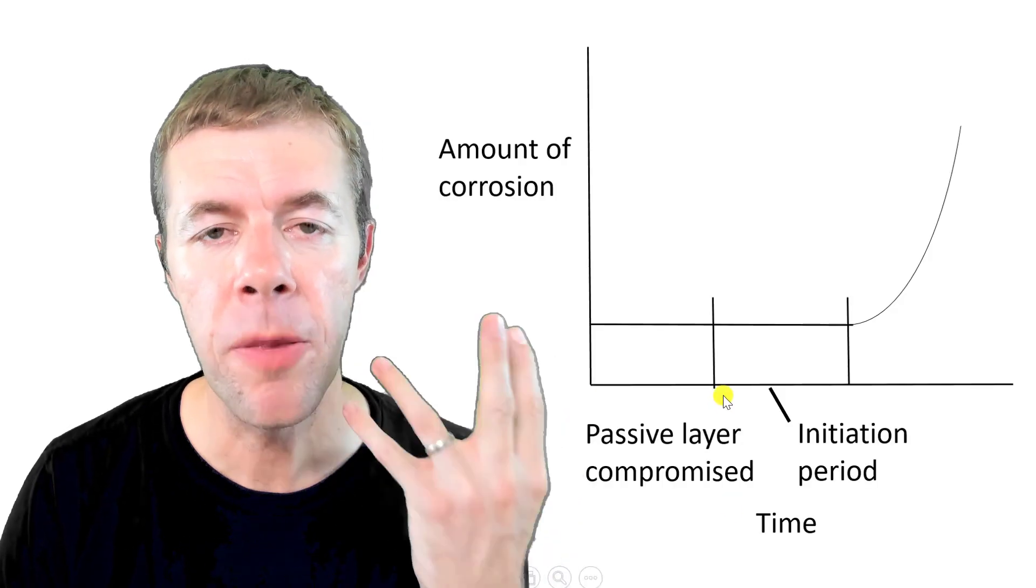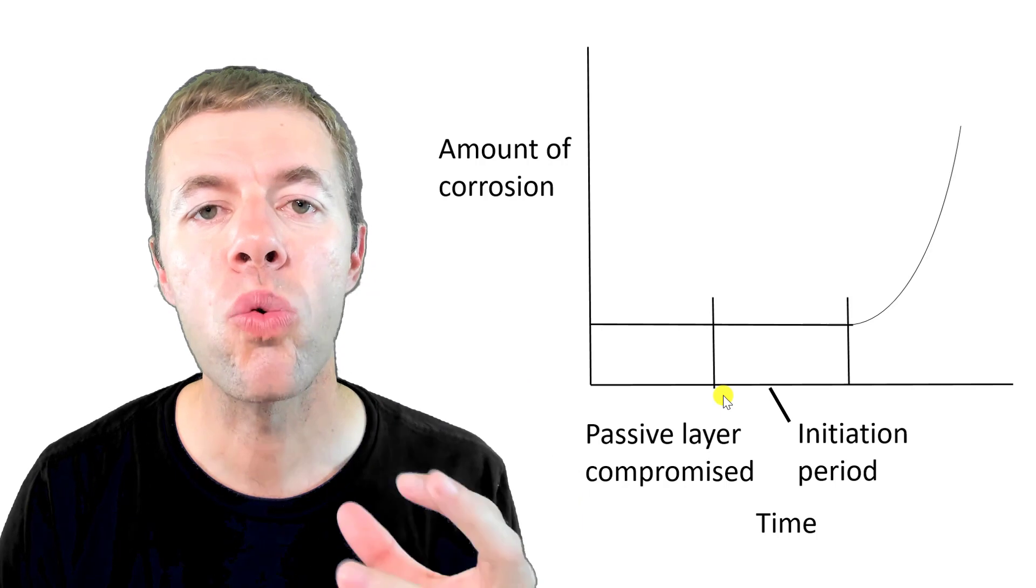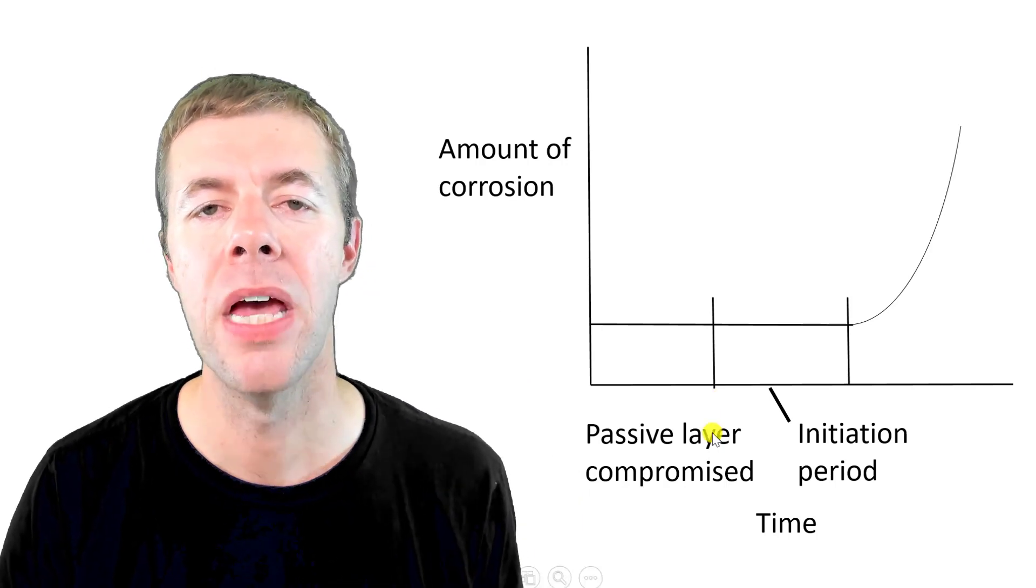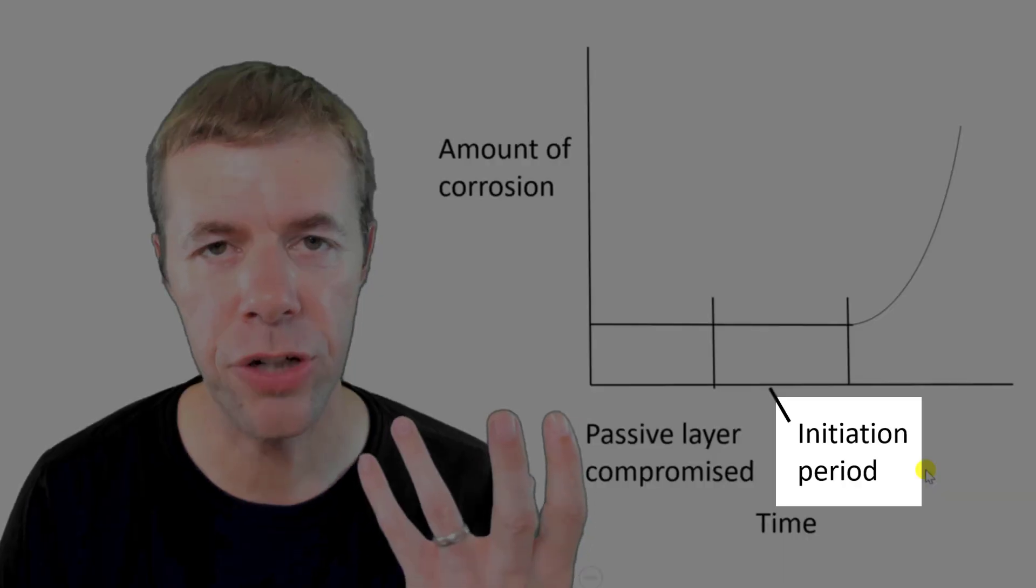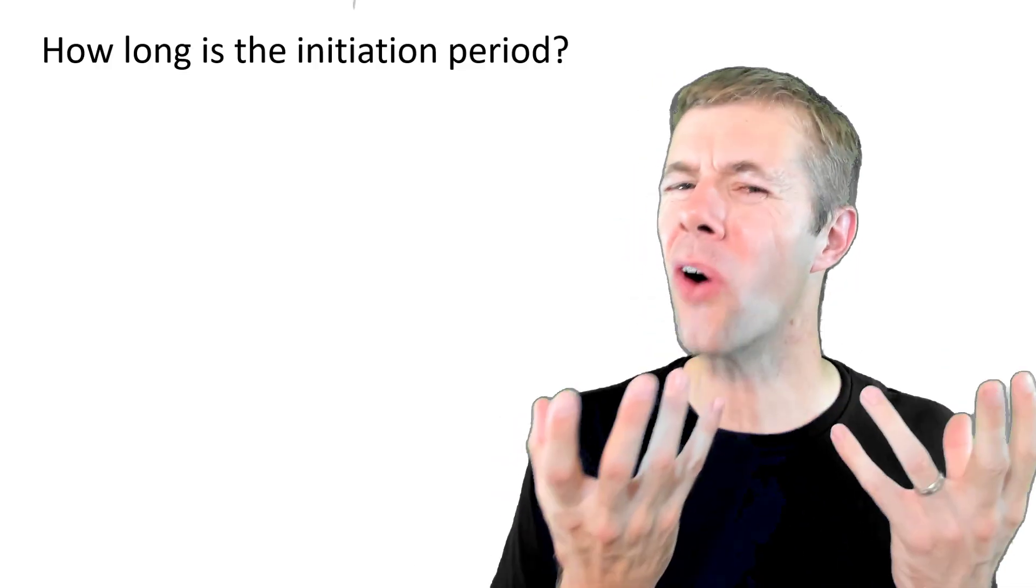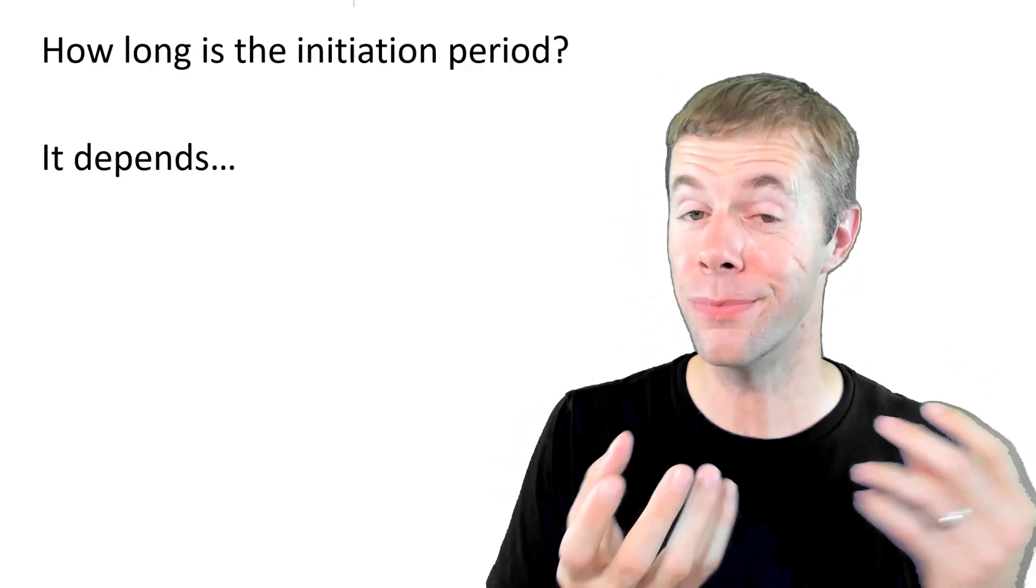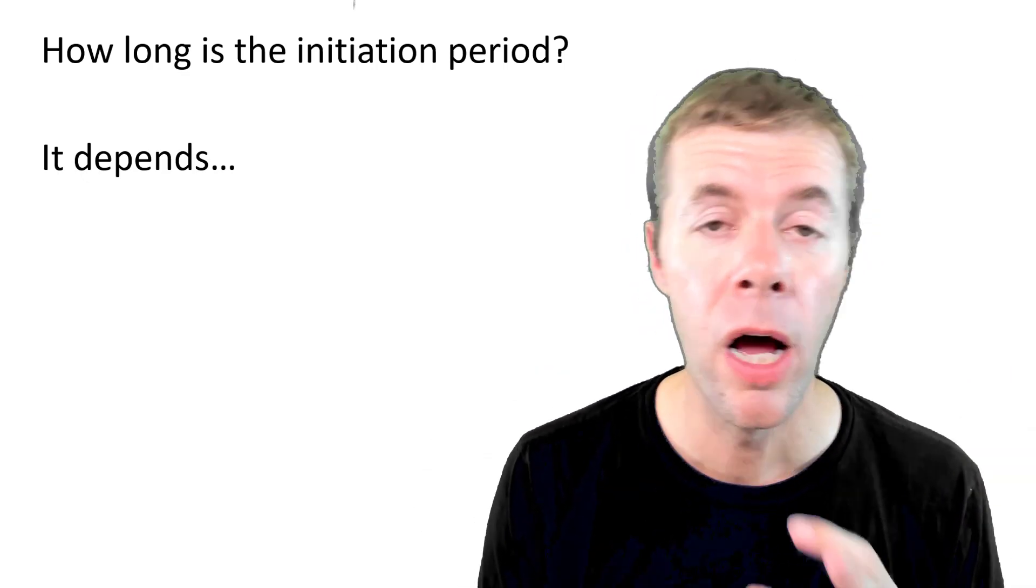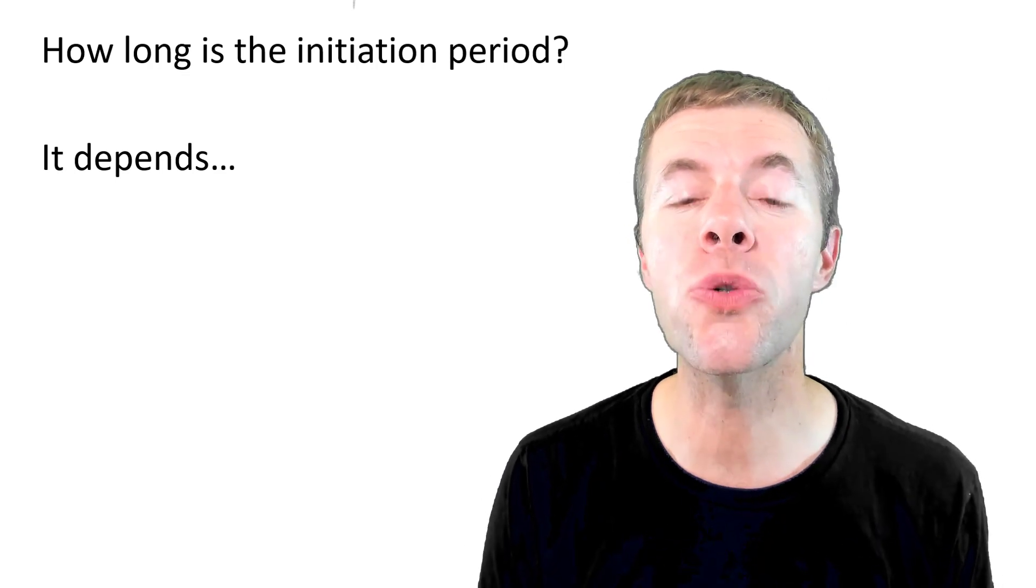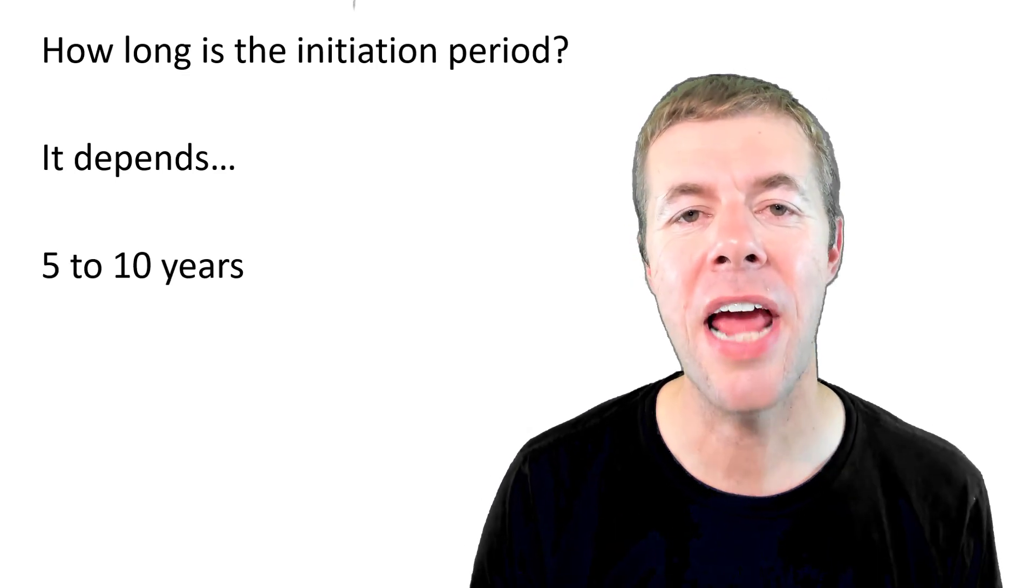But then even after the passive layer is compromised, corrosion doesn't start immediately. It actually takes some time. Something called the initiation period. So how long is this initiation period? Well it depends. People argue it have measured all kinds of different numbers. But its general agreement is somewhere between five and ten years.